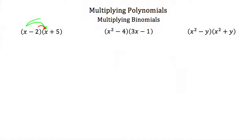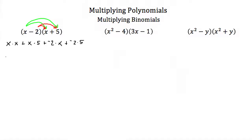You're basically taking the first term in your binomial and multiplying it by everything in the second expression, then taking the second term of your first binomial and multiplying that by everything in the second expression. So we end up with x times x, plus x times 5, plus negative 2 times x, and negative 2 times 5. x times x is x squared, 5 times x is 5x, negative 2 times x is negative 2x, and negative 2 times 5 is minus 10. Combining like terms, we'd have x squared plus 3x minus 10.